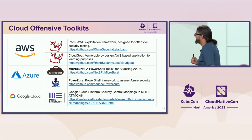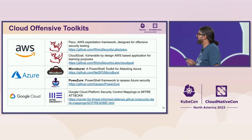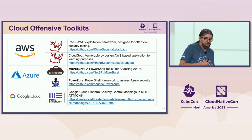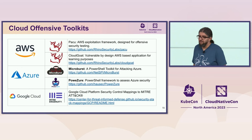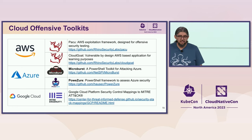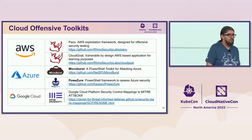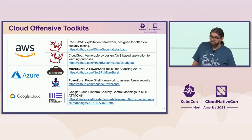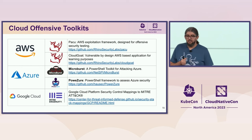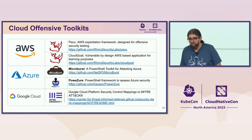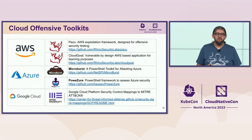There are also a couple of offensive toolkits for the major three cloud providers. From Rhino Security, there is PACU, an exploitation framework for AWS, and CloudGoat, a vulnerable-by-design application based on AWS for learning adversary emulation. For Microsoft Azure, you can use Microburst and PowerZure. For Google Cloud, there is the Google Cloud Platform security control mapping to MITRE ATT&CK.